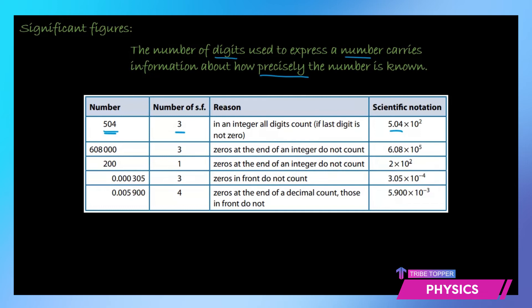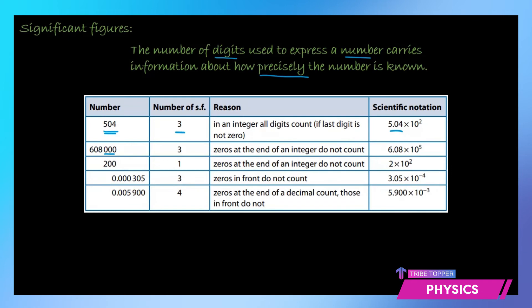Then we have 608000. How many significant figures? Both the non-zero digits that is 6 and 8 are of course countable. The zero which lies between 6 and 8 is also countable. But the trailing three zeros are not significant. So the zeros at the end of an integer do not count. So 608000 has only three significant figures and its scientific notation will be 6.08 times 10 to the power of 5.